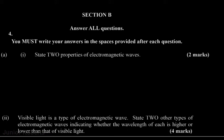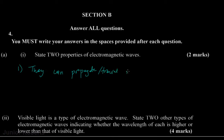Our question says we are to state two properties of electromagnetic waves. The first property is that they can propagate — by propagate we mean they are able to travel — in a vacuum.